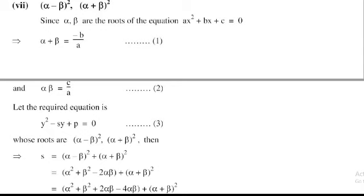Since α and β are the roots of the equation ax² + bx + c = 0, the sum of roots α + β = −b/a (equation 1), and the product of roots αβ = c/a (equation 2). The required equation is y² − Sy + P = 0 (equation 3), whose roots are (α − β)² and (α + β)².